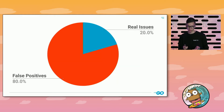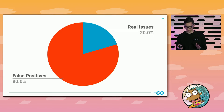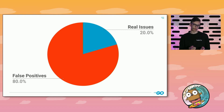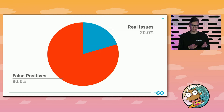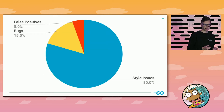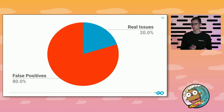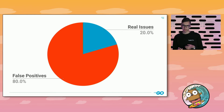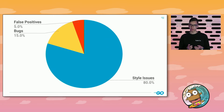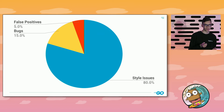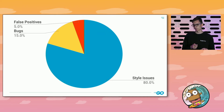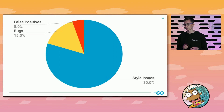One can say: okay, linters can be helpful, but what if I run linters and get around 80% false positives? How can I use linters with such a distribution? That can be true if you run linters for the first time on a large project with millions of lines of code. But if you configure linters properly — I'll show how later — from my experience, the distribution will be around 5% false positives and around 10% real bugs.